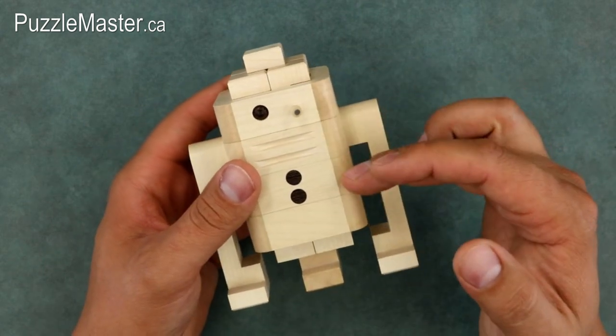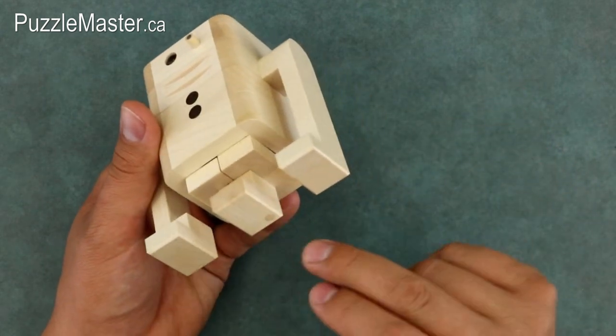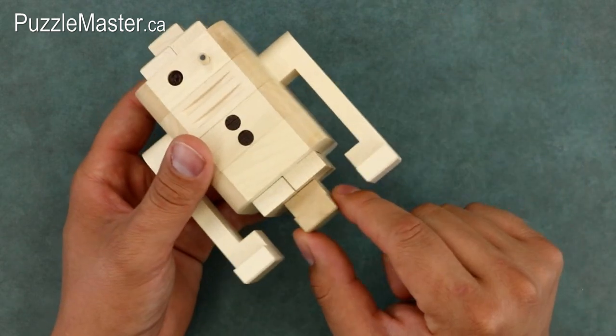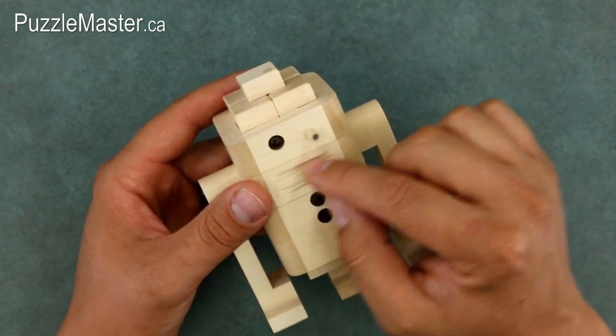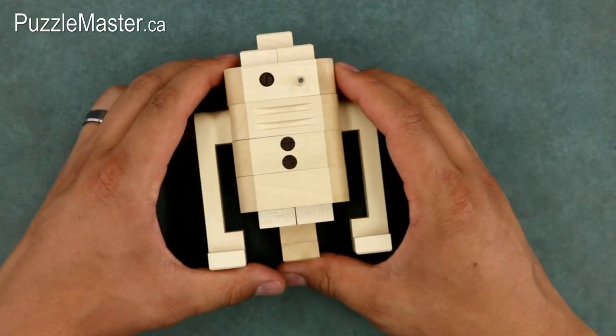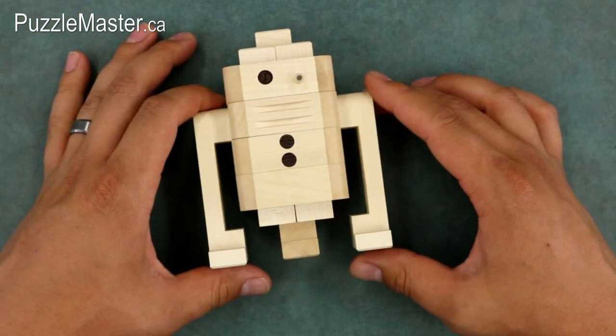It's obviously not one, two, three, four, five, six, seven, eight, nine pieces. So somewhere in here, I imagine maybe this bottom piece, this middle piece, joins to the legs. It's a great puzzle though.